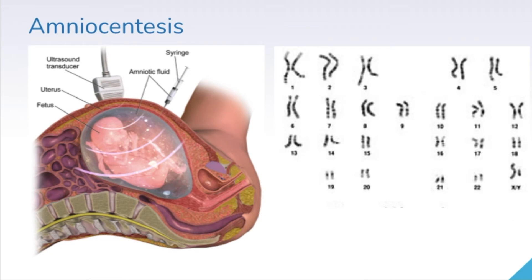When we look at a karyotype, we identify and evaluate the size, shape, and number of chromosomes in our sample of cells. Some problems that we could see would be duplicates of chromosomes where there shouldn't be, deletions of certain arms of chromosomes, or translocations of chromosomes. Scientists have to arrange the chromosomes into the correct order after the picture is taken, and once they are arranged, we can look and determine if there are any genetic abnormalities.